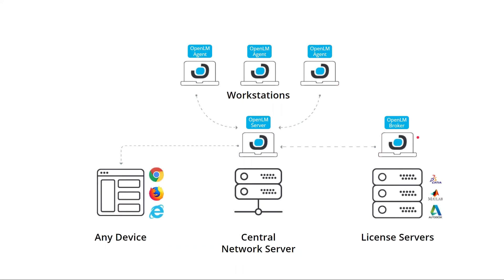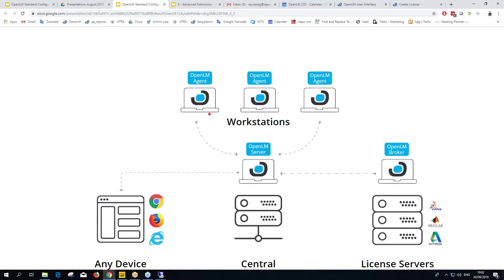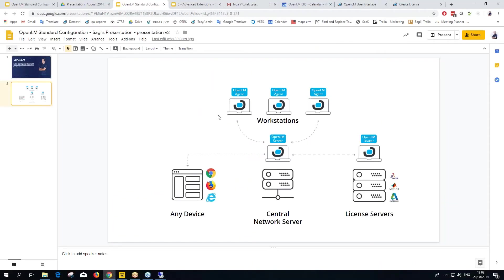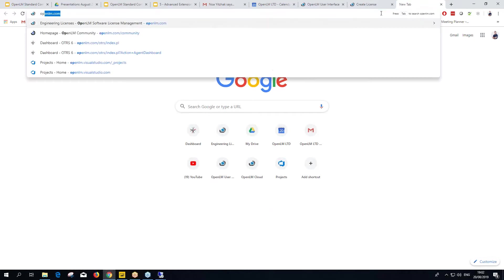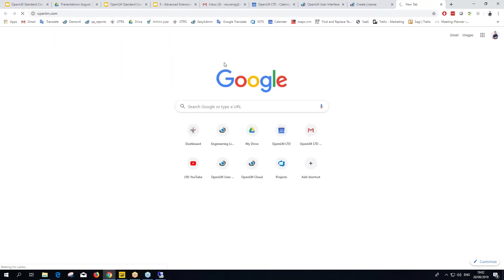The broker and agent are optional. If you can't install on the license server due to permissions, or can't roll out that many agents, that's fine — each organization has its own constraints. Let's start with the OpenLM Server. We'll need to go to the OpenLM website.